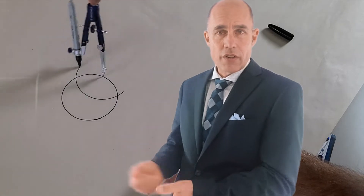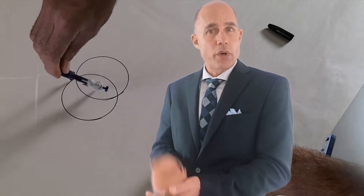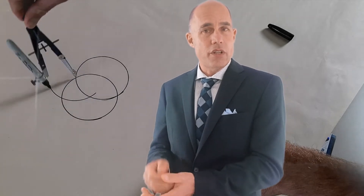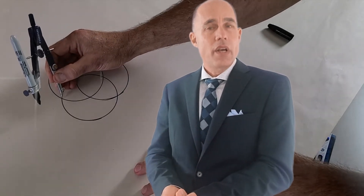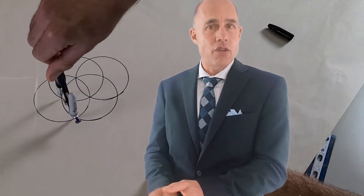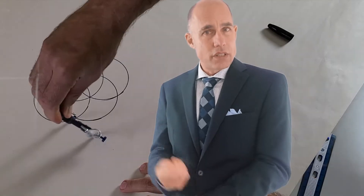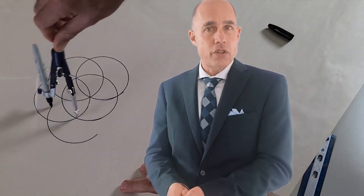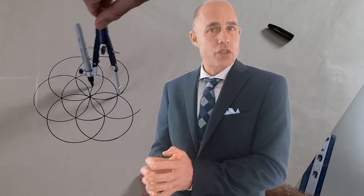You put your compass down on a blank piece of paper and you draw a circle. Then you put the point of the compass on the edge of the circle you just drew and you draw another circle. You continue this process by putting the point of the compass down on the points where the circles are overlapping and you continue to draw a circle. The first part of the process gives you six circles around the initial circle.